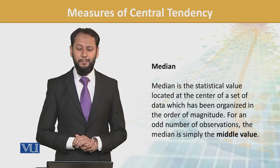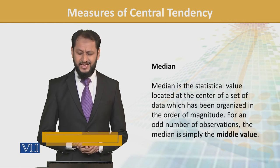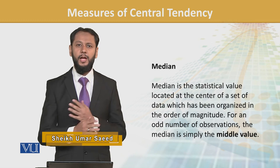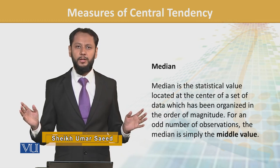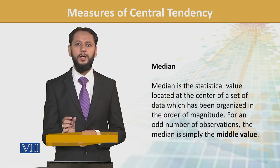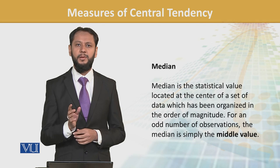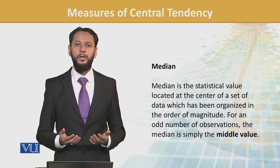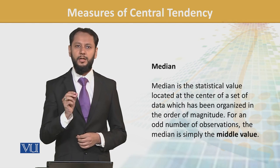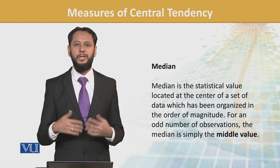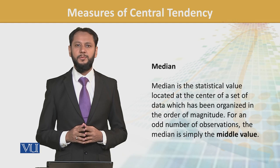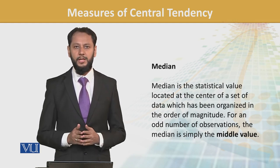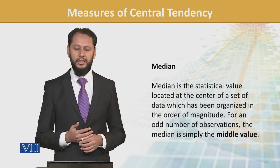Next is median. Median is the statistical value located at the center of the set of data. If it is an odd number of observations, the middle point is very easily the median. If it is an even number, then the mid value in that circumstance will be referred to as the median.